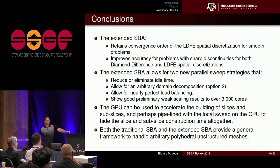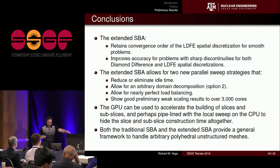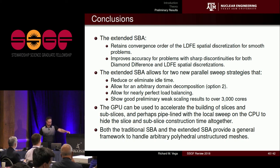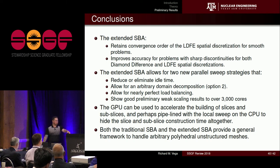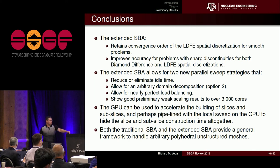In conclusion, the extended SBA retains the convergence order of linear discontinuous finite element spatial discretization for smooth problems and increases accuracy for problems with sharp discontinuities. It adds two new parallelization sweep strategies that either reduce or eliminate idle time, allow arbitrary domain decompositions, and both allow for nearly perfect load balancing. Both show decent weak scaling out to 3,000 cores. The GPU can accelerate slice and subslice construction, potentially hiding that cost entirely through CPU-GPU pipelining. Both the traditional and extended SBA handle arbitrary polyhedral unstructured meshes — such as a dog.